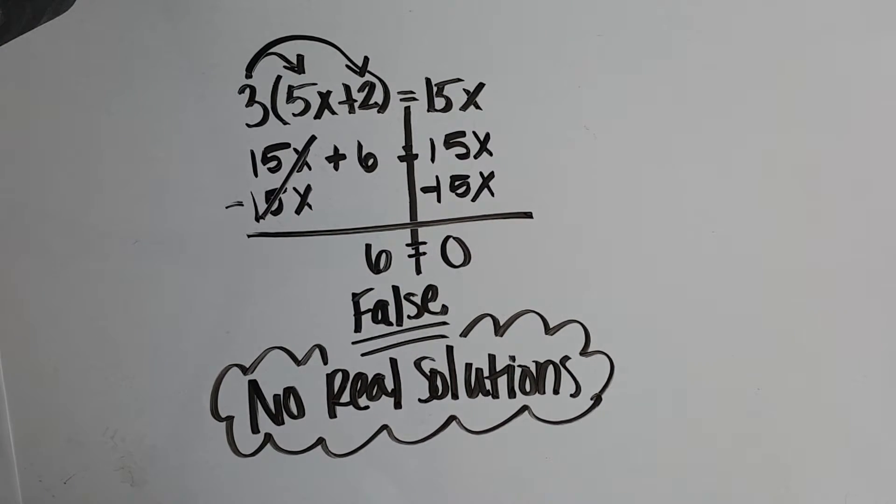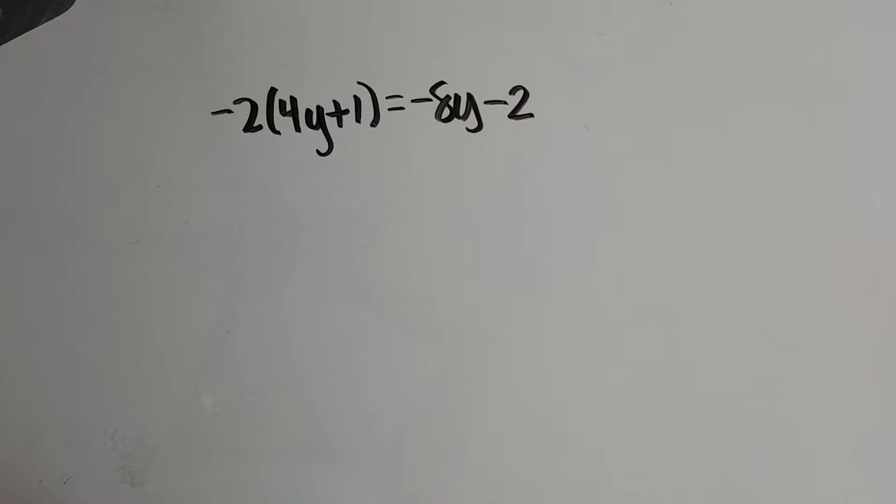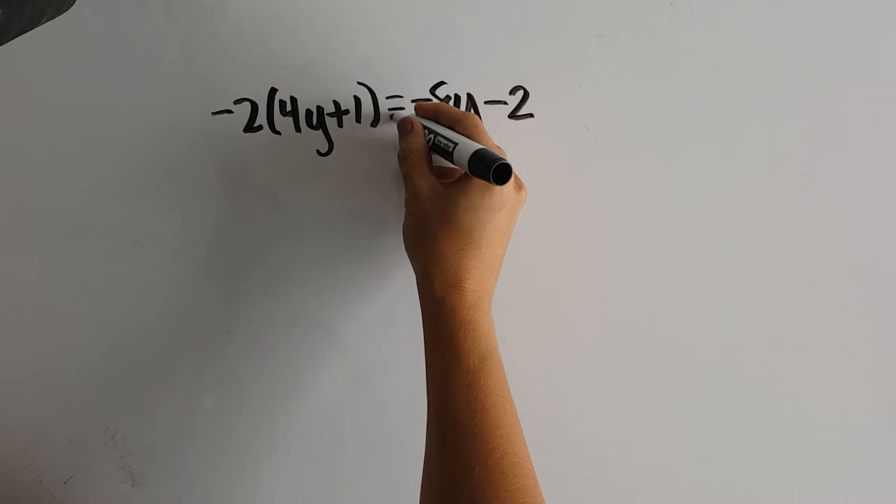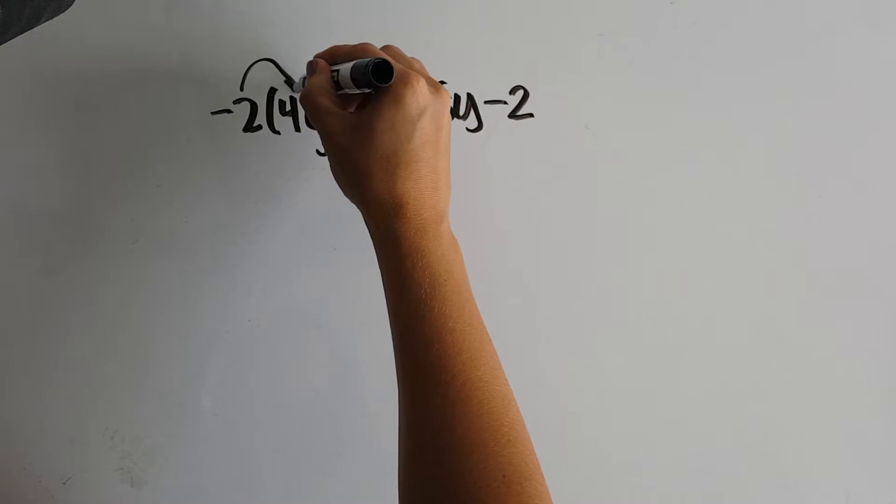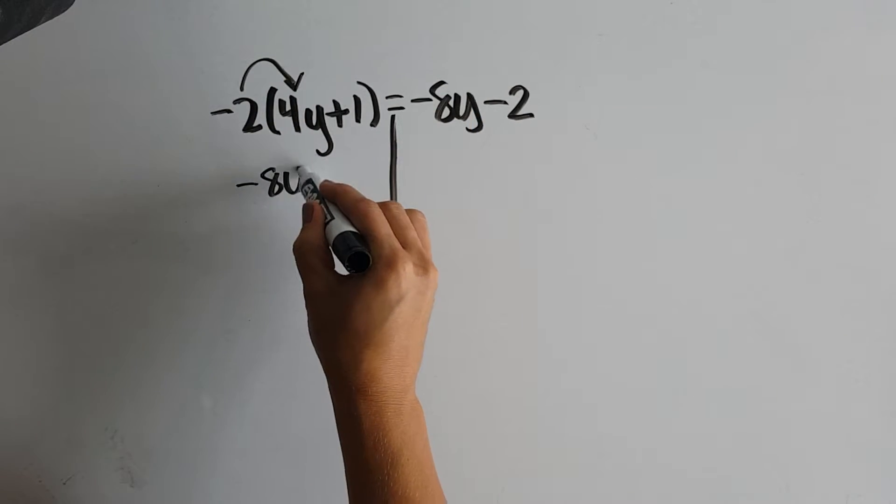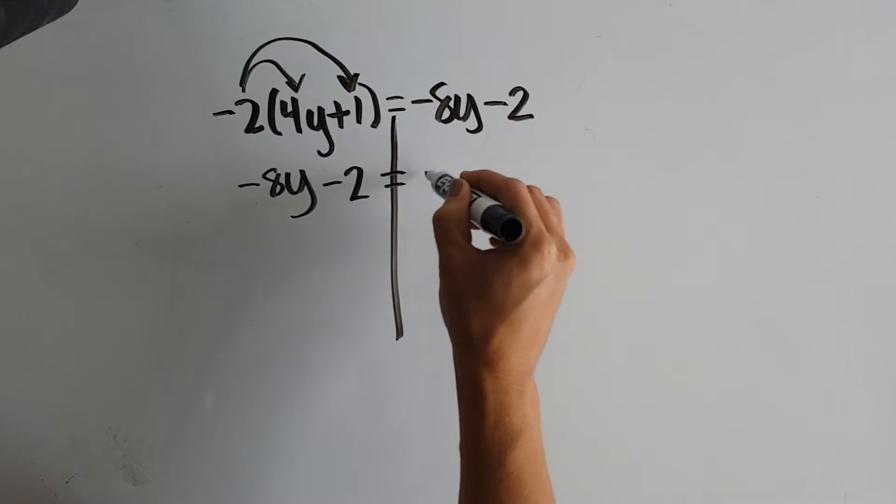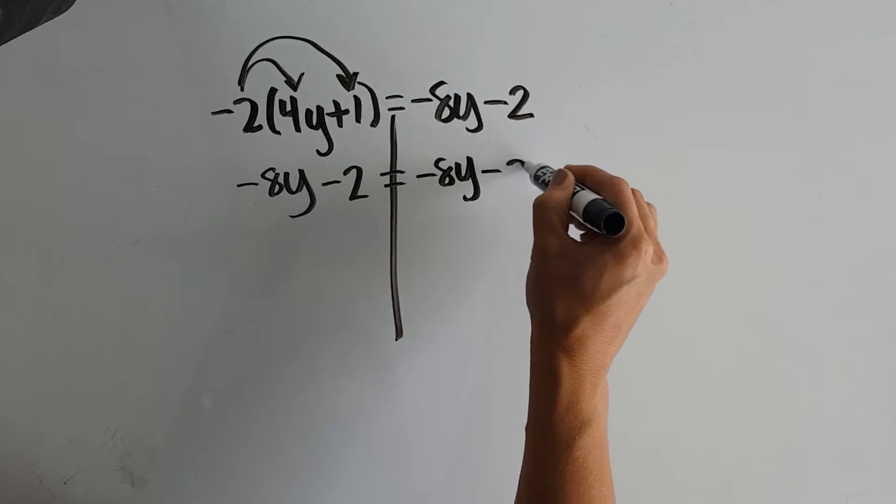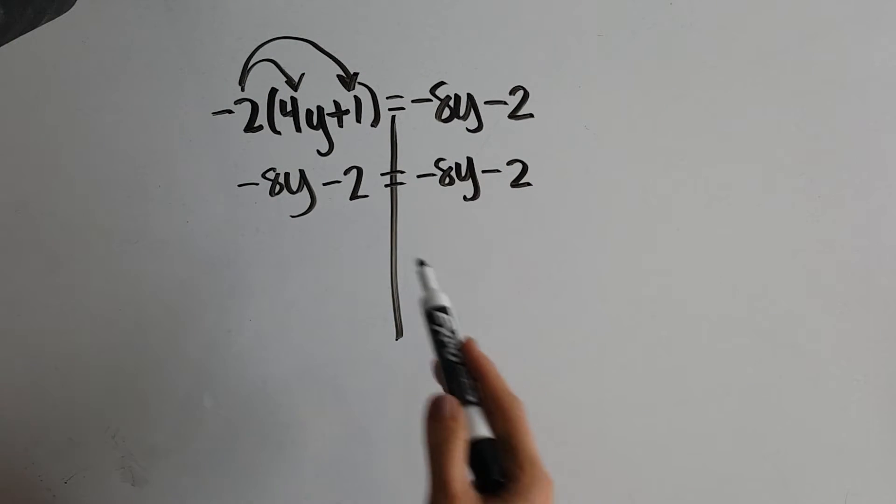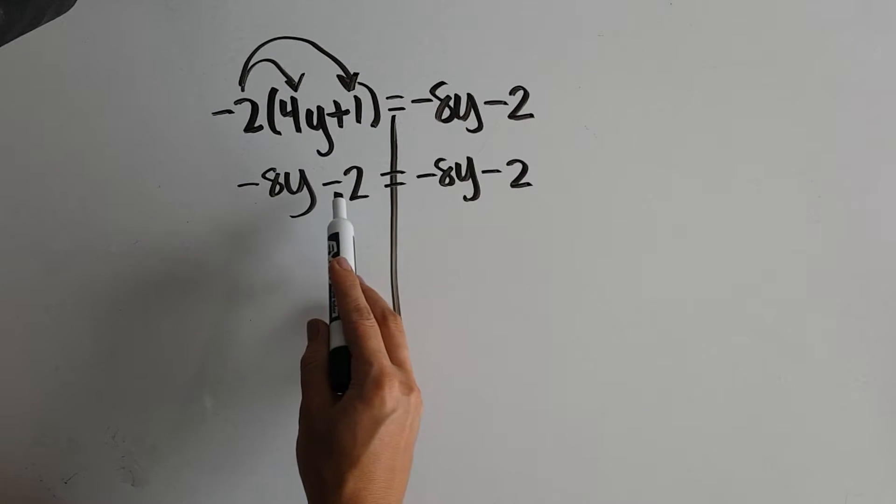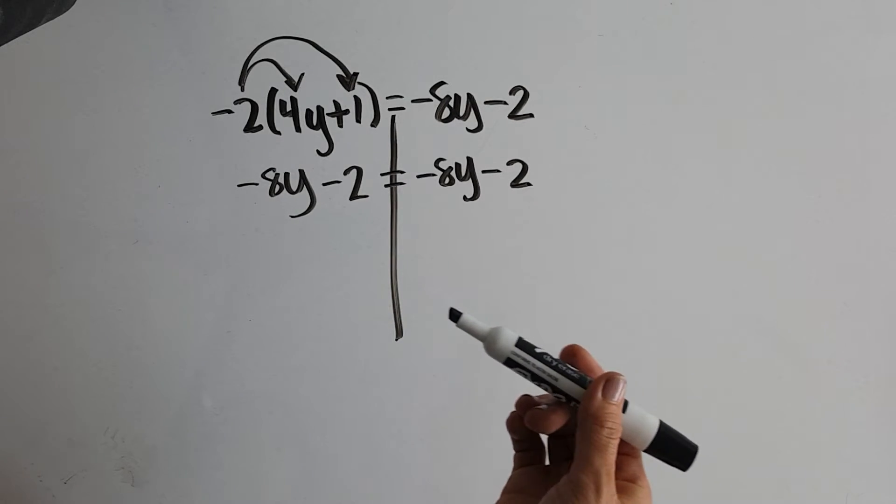Now let's look at what happens if we have infinitely many solutions. We're going to start this one the same way. Simplify each side. So we get negative 8y minus 2 on the left. And the right side is also negative 8y minus 2. So right away, we should notice the left side and the right side are exactly the same thing.